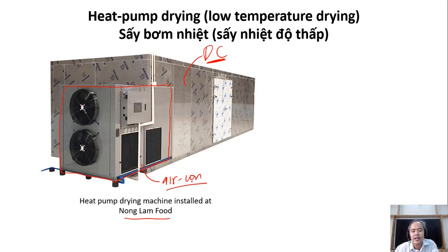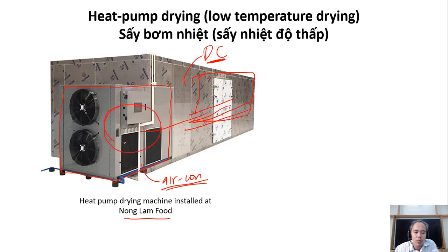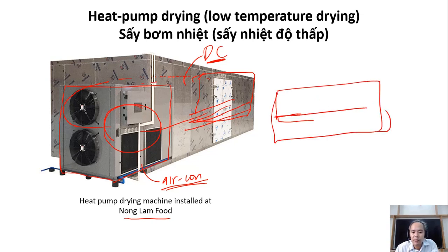There are two refrigerators in the system, one on each side. The air moves along the food, goes out, and exchanges heat with the cooling system — with the refrigerator. Then the air comes back into contact with the food. The system has a division in the middle with a mechanical refrigerator on each side.